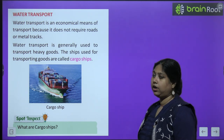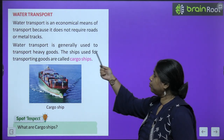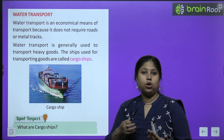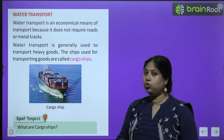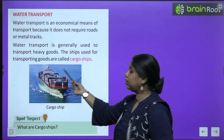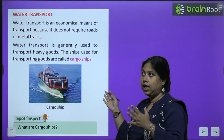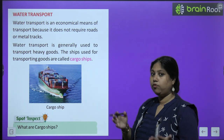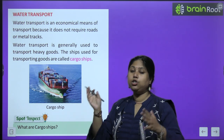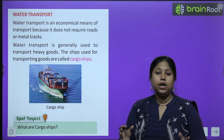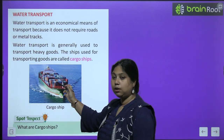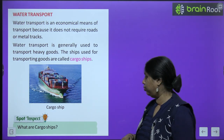Now let's move to water transport. Water transport is an economical means of transport because it does not require roads or metal tracks. Water transport is generally used to transport heavy goods from one place to another using ships. The ships used for transporting goods are called cargo ships — they carry many boxes arranged in an orderly manner.